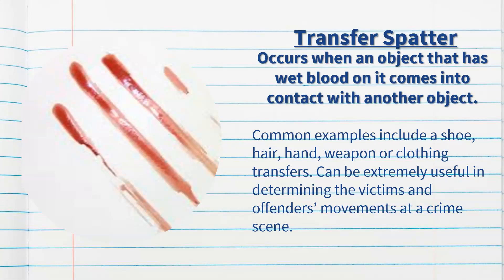The second type is transfer spatter, which occurs when an object with wet blood on it comes into contact with another object. It is one of the most common types seen at a crime scene. Common examples include a shoe print, a hair print, a hand print, a weapon print, or clothing transfers. This is very useful in determining the victim's and offender's movements at a crime scene — a hand swipe, hair swipe, or shoe print can indicate the direction either the victim or criminal was moving.